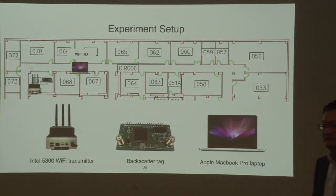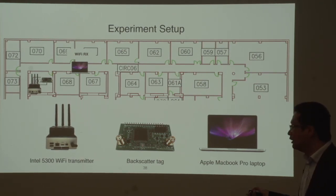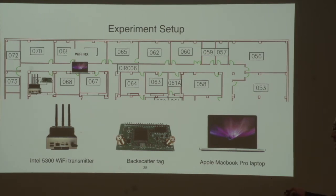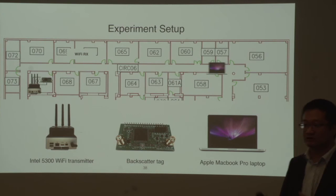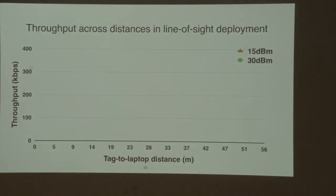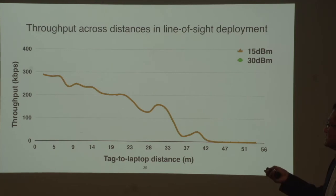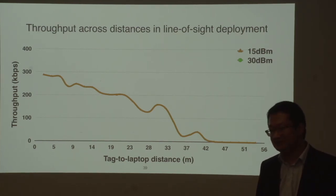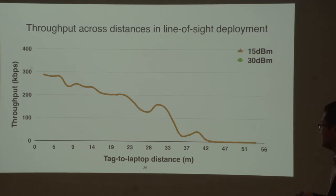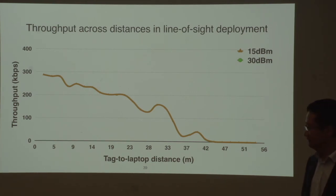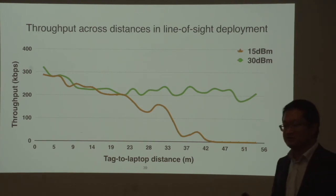To benchmark performance, we deployed the system in an office building with a Wi-Fi transmitter and our tag one meter away. Using the Wi-Fi receiver to measure backscatter throughput across distance, we found that at close range we can achieve around 300 kilobits per second. The maximum distance between the tag and receiver is around 42 meters. When we increase the Wi-Fi transmitter power to 30 dBm — the maximum allowed by FCC — the operational distance can be larger than 50 meters.